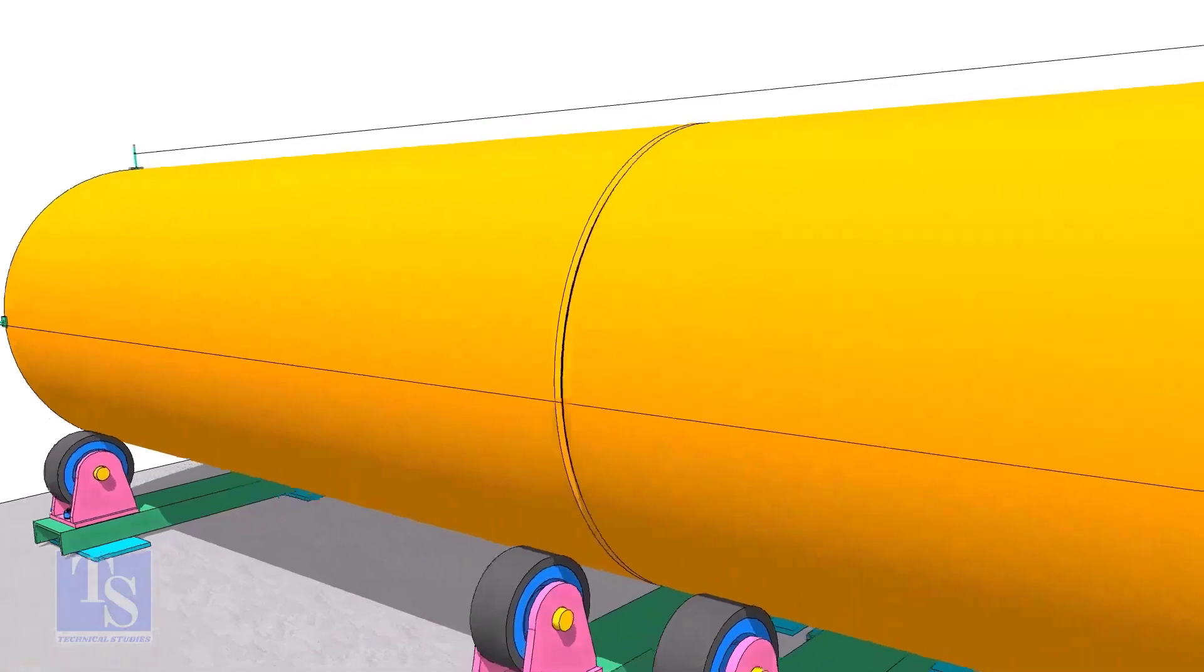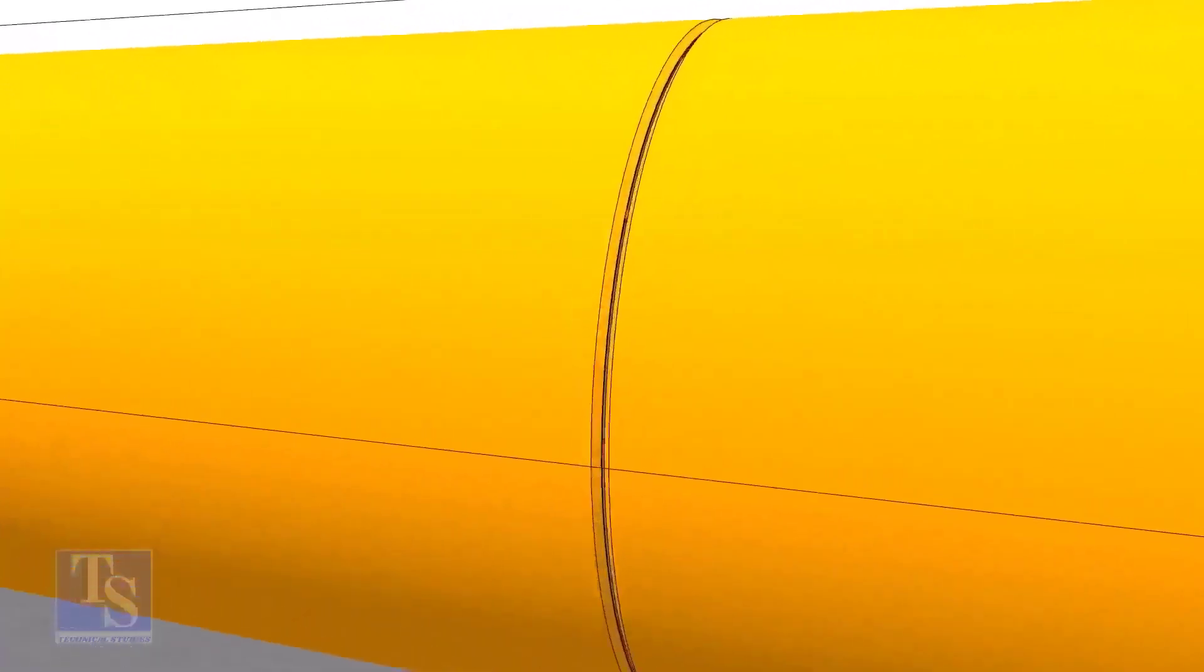Check the straightness of the pipes again and tack weld at four locations 90 degrees apart. If you tack weld continuously starting from a point, the joint will come closer, and at some point you will see there is no gap at all.